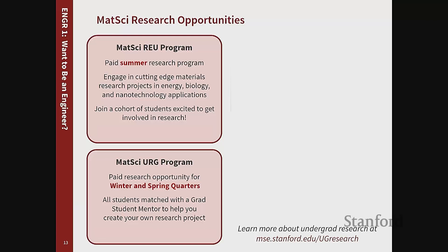A lot of our students really take a liking to getting involved in research while here at Stanford. Research is a great way to supplement your learning in classes by getting hands-on and working with graduate students and faculty on cutting-edge problems. We have a great MatSciRU program over the summer where you get paid to do research at Stanford and work in a cohort of about 20 peers on a wide variety of research topics. We recently started last year an undergraduate research grants program — the URG — which lets you get paid to do research in the winter and spring quarters for about 10 hours a week. Happy to chat about that in the Q&A.